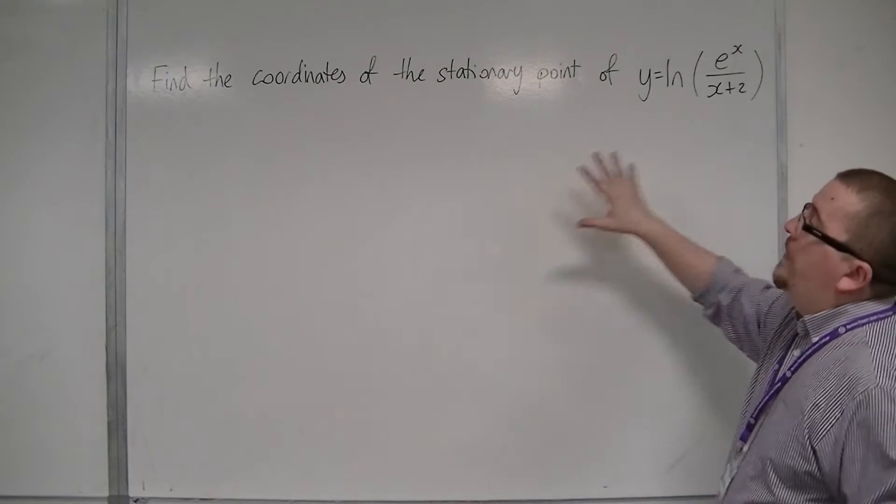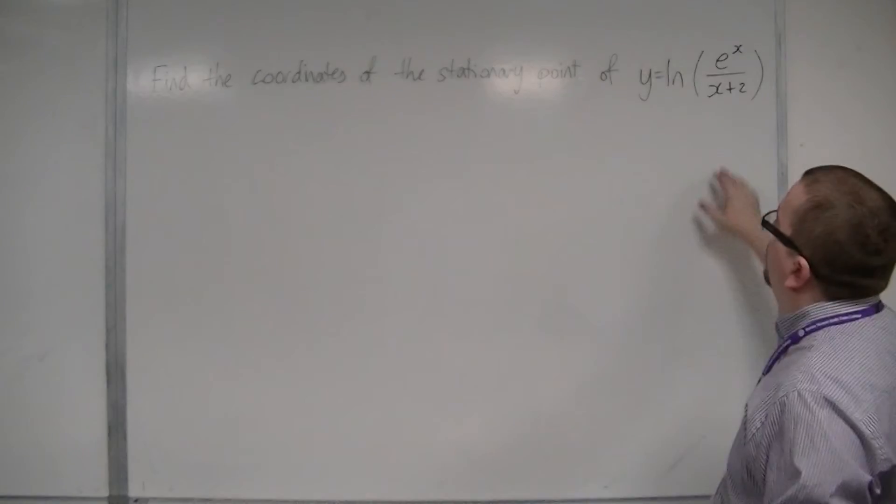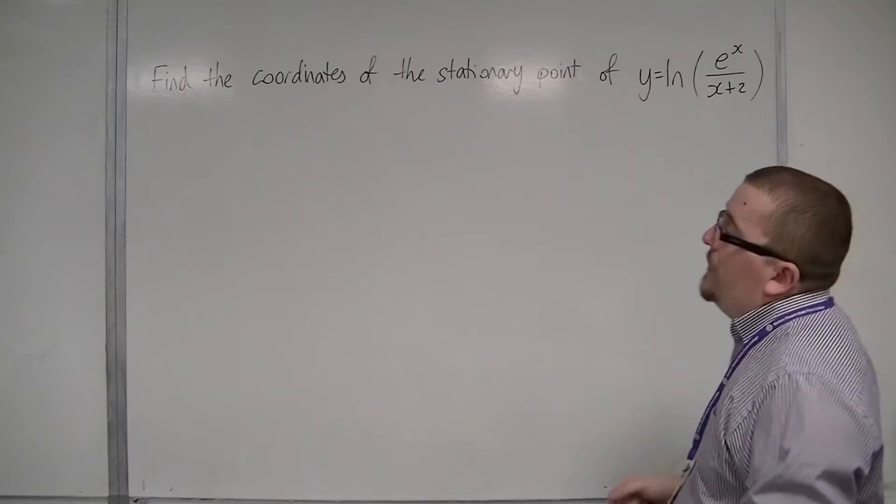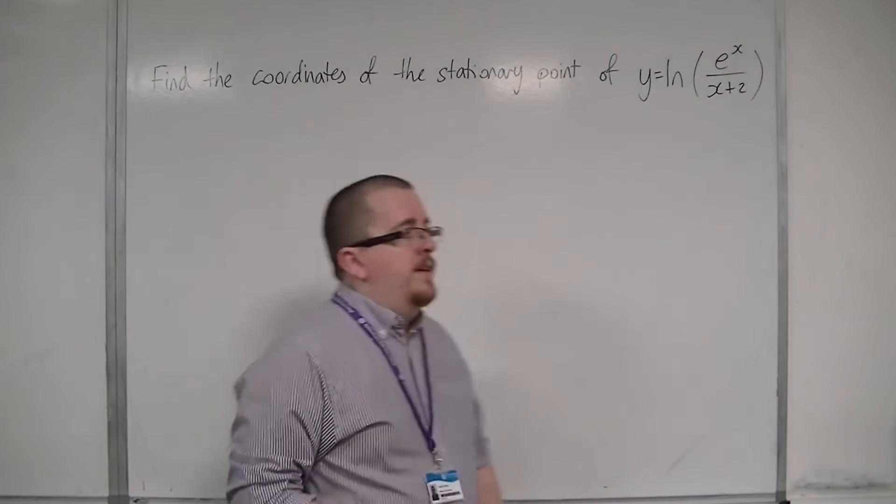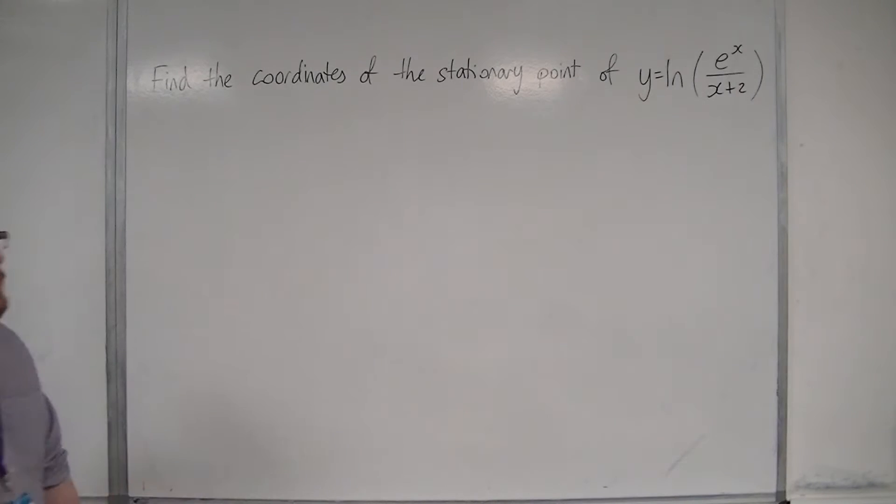So, we want to find the coordinates of the stationary point of y equals log of e to the x over x plus 2. Now this looks absolutely horrendous because we know that we're going to need to differentiate this.